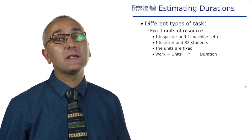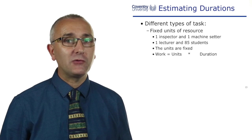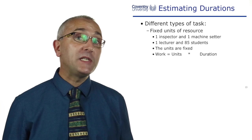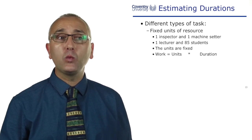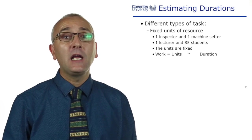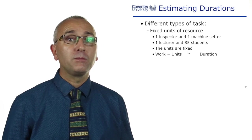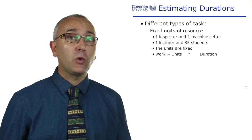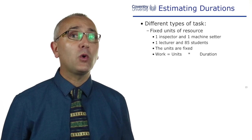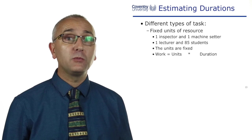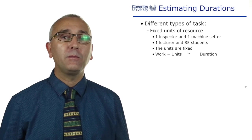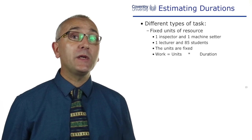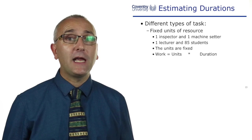Our final resource type has a fixed unit characteristic. So it could be to do a task we need at least one machine setter and one inspector, or for the educational example, to do this lecture we need at least one lecturer and at least one student. And if we don't have those number of units, the task is not going to happen. In this case we can fix the number of units in our equation.